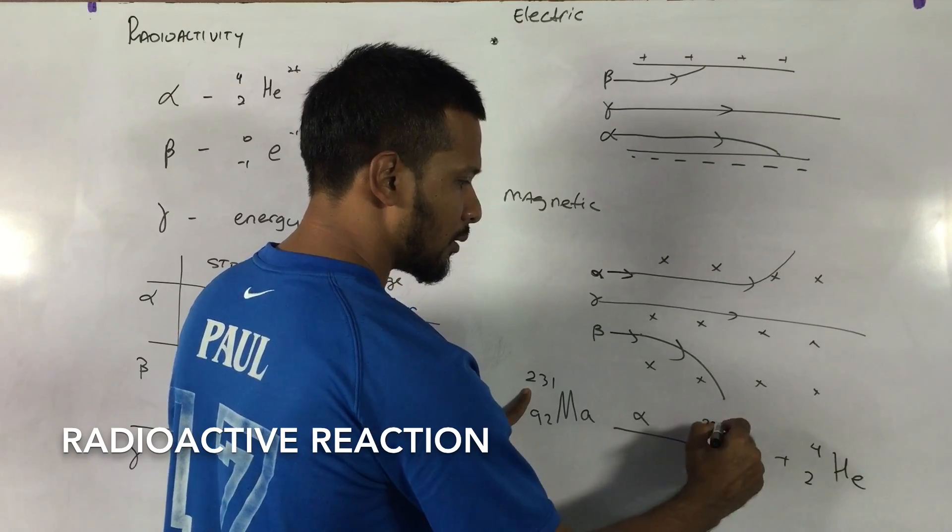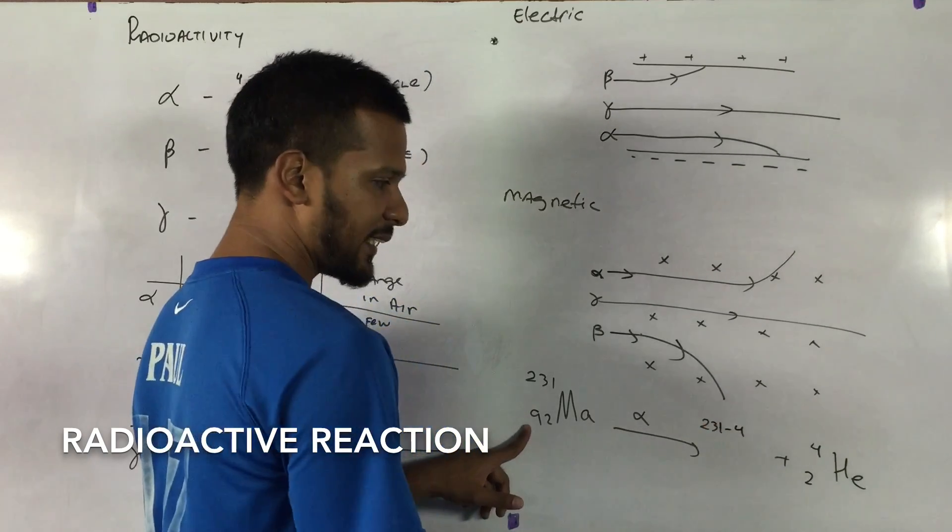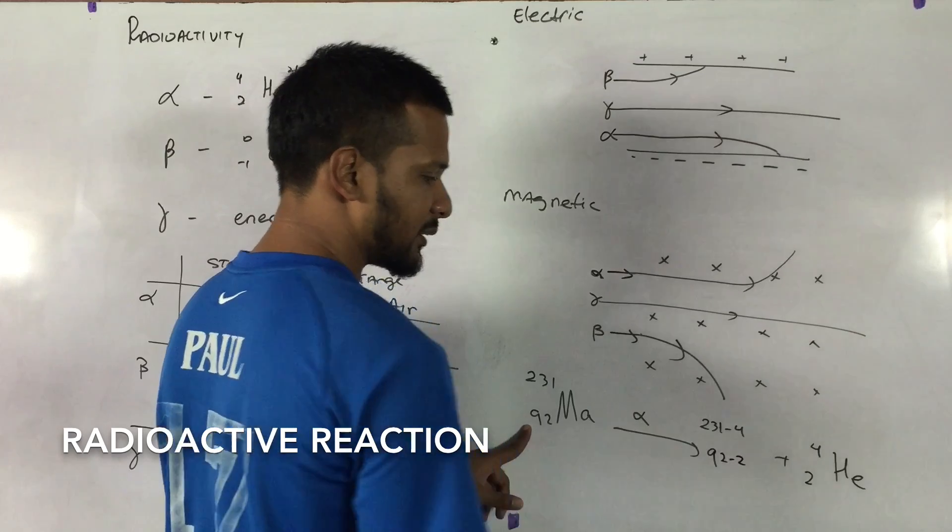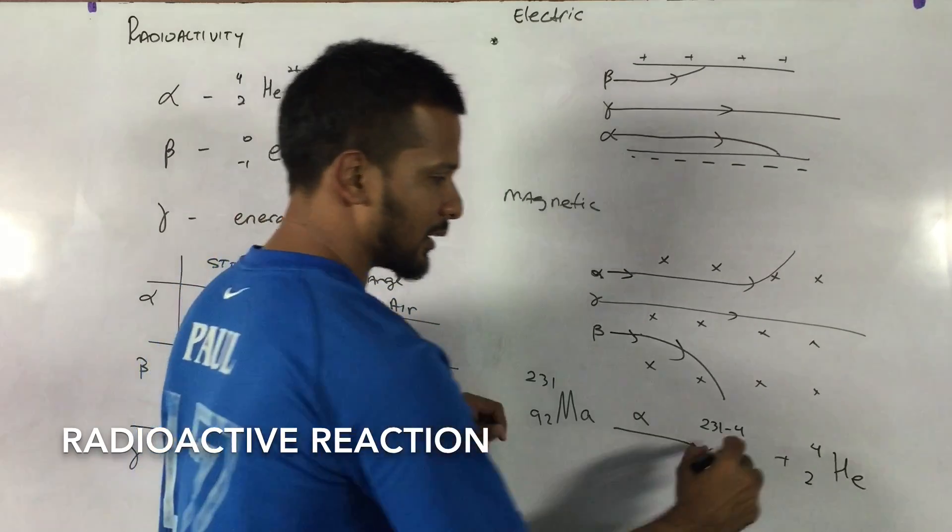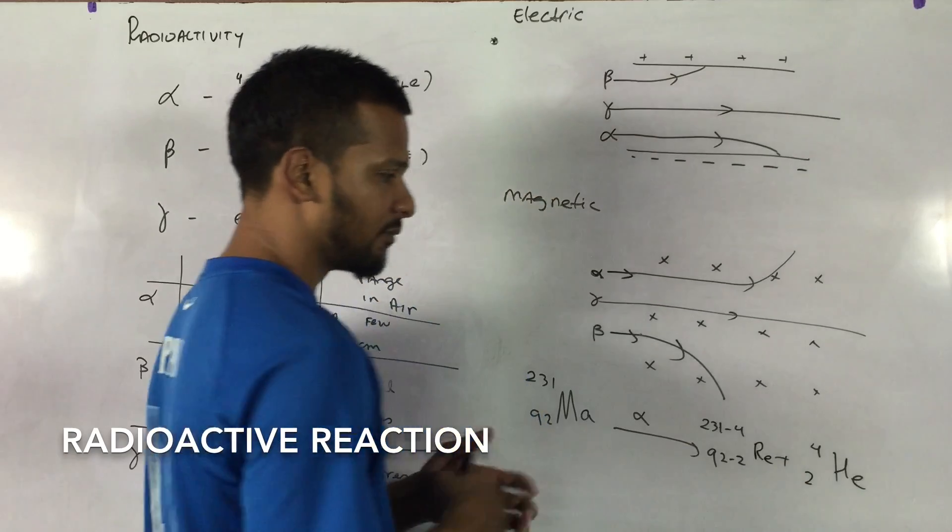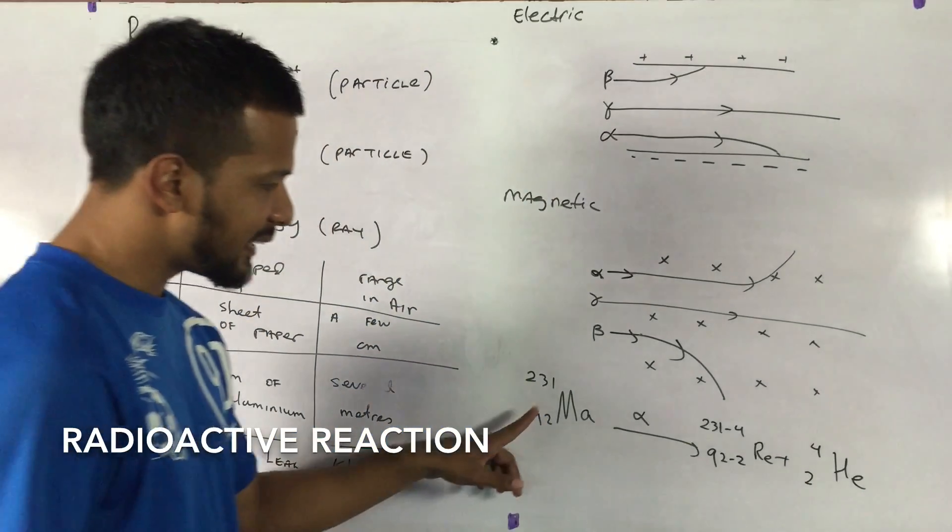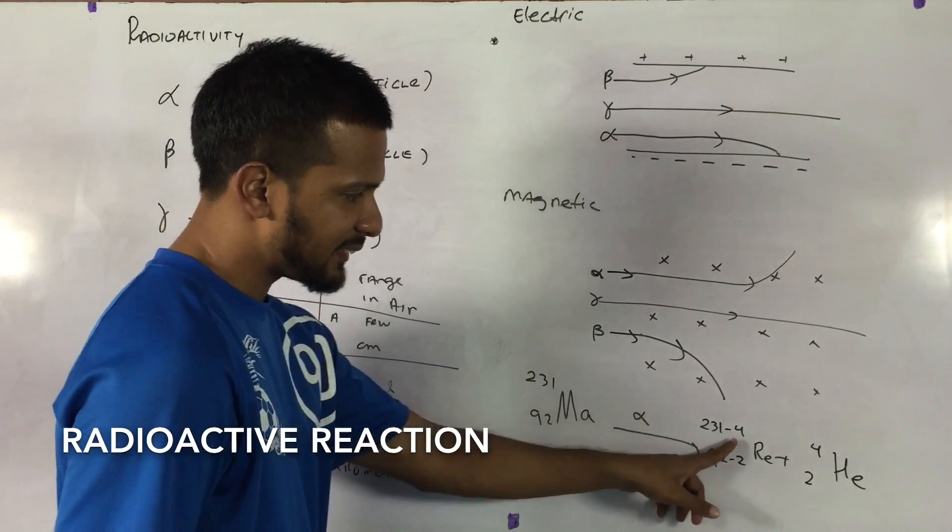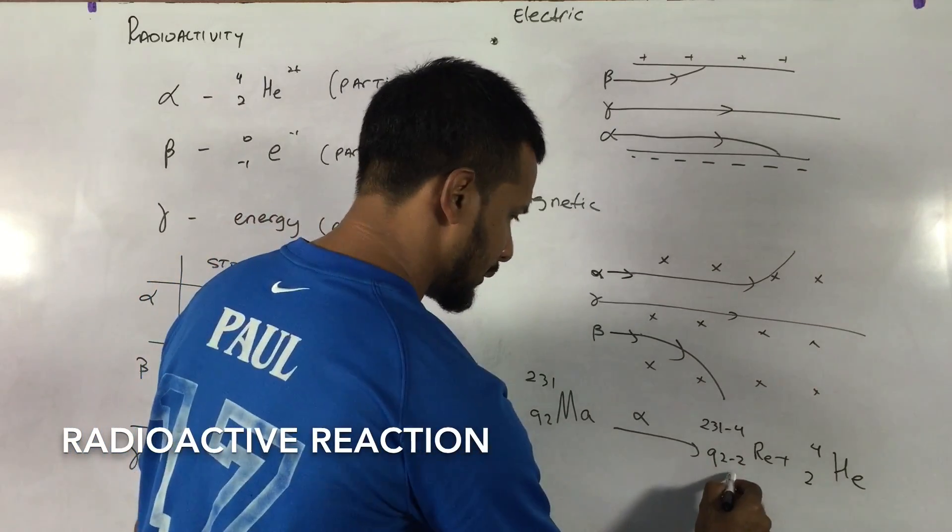231 minus 4. If I take 2 out of here, I will get 92 minus 2. And let's call the particle, this is Madrid, I call this Real. So if I take 231, if I take 4 out, I will end up with this.